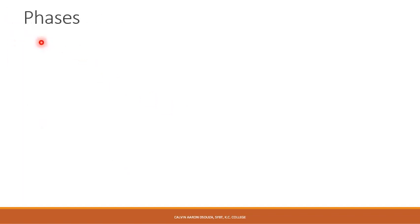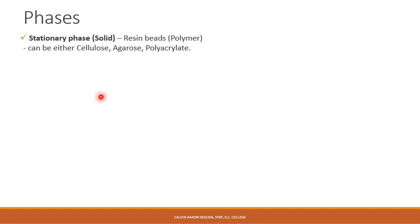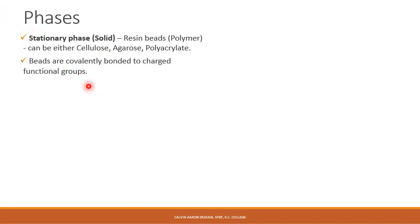Like any chromatography technique, you have two phases. The stationary phase in this case is a solid stationary phase. It consists of resin beads, and these resin beads are polymers — the polymer can either be cellulose, agarose, or even polyacrylate. These beads are covalently bonded to charged functional groups so that the stationary phase can be charged along with that of the sample.